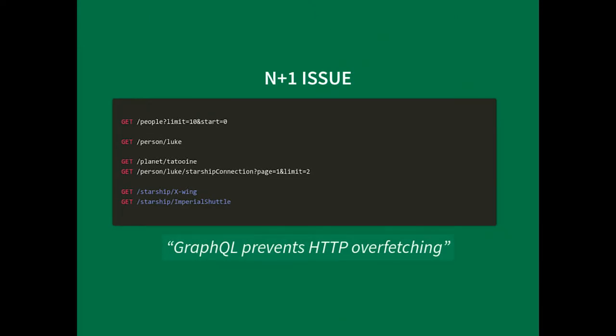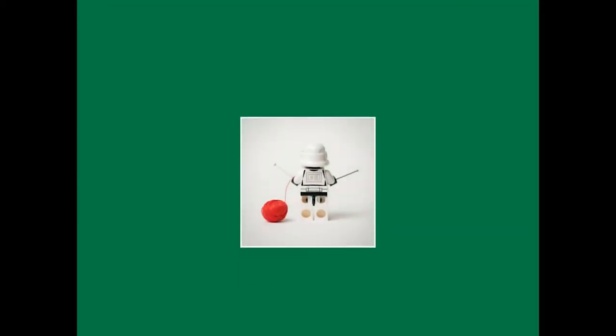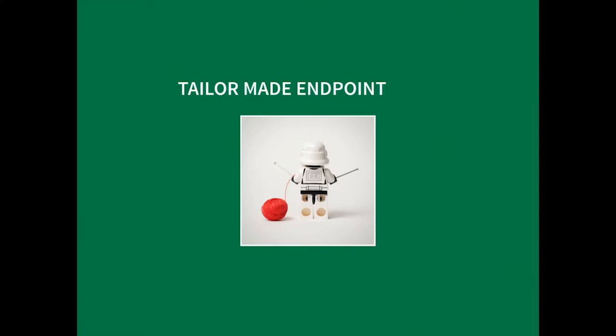The N+1 issue is when you have to wait for certain data before continuing your algorithm. You first check the list of people, get a certain person, then start drilling down all the data you need. GraphQL actually comes in, as one of its main reasons, to prevent this kind of thing. So let's say we have tailor-made endpoints. You might say, 'I already have tailor-made endpoints, they're called RPC.' And with RPC you can get all the information about Luke, his spaceships, the world he lives on. But let's see how GraphQL approaches this differently.